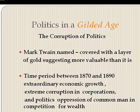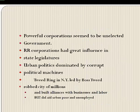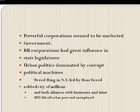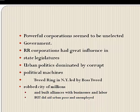During this period, Americans saw their nation as a beacon of democracy in a world where few European governments extended universal male suffrage. Yet the power of corporations seemed removed from democratic controls, raising questions about political freedom and popular self-government. Political corruption was pervasive — railroad corporations wielded great influence in state legislatures, and urban politics was dominated by corrupt political machines such as the Tweed Ring in New York, which robbed the city of millions while building alliances with businessmen and providing aid to the urban poor to gain their loyalty and votes.